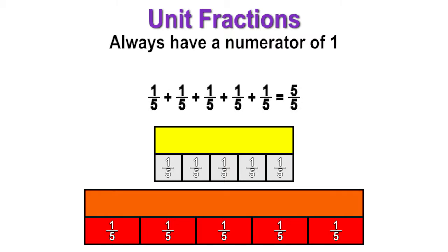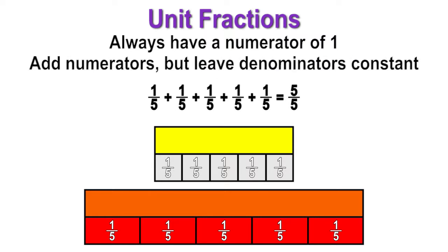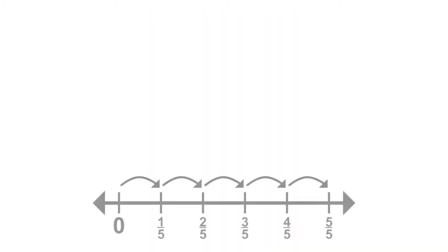Our equation has five addends of one-fifth. When we add unit fractions together, we add the numerators but leave the denominator constant. This is because the denominator describes the size of the fractional parts. The whole is still partitioned into fifths, and five-fifths are still required to make the whole, so the denominator remains as fifths.